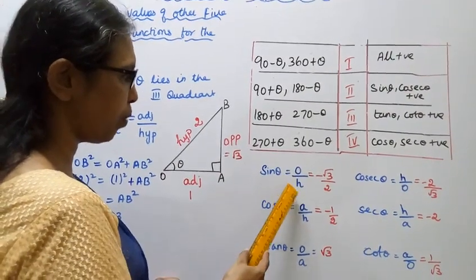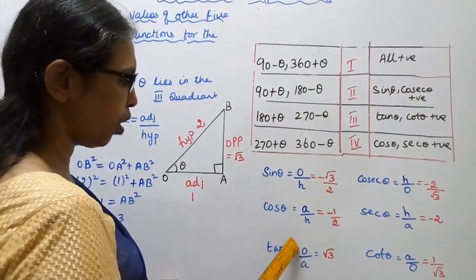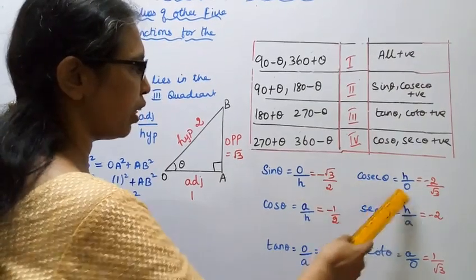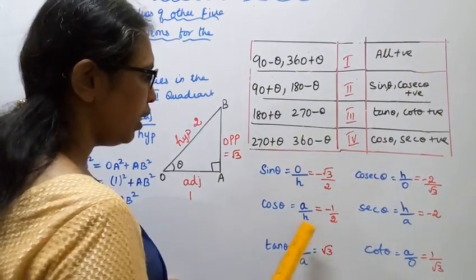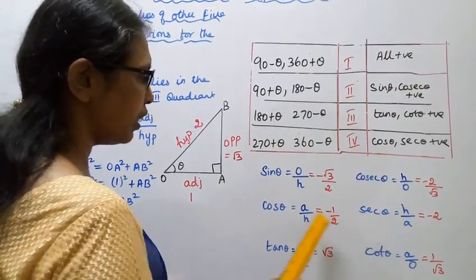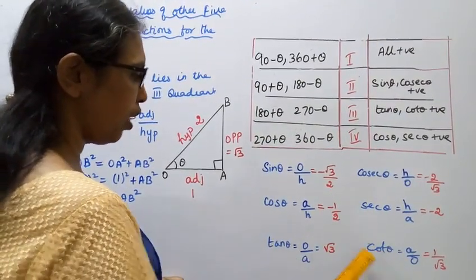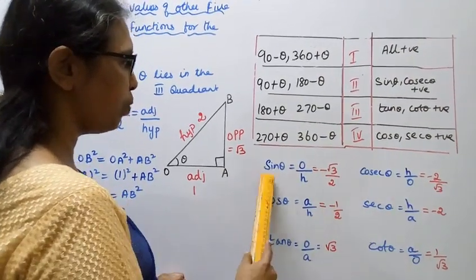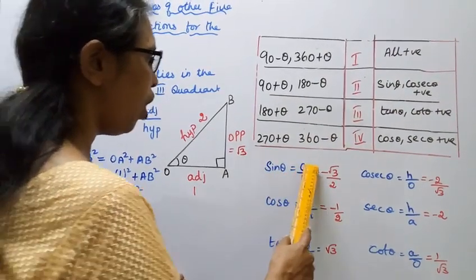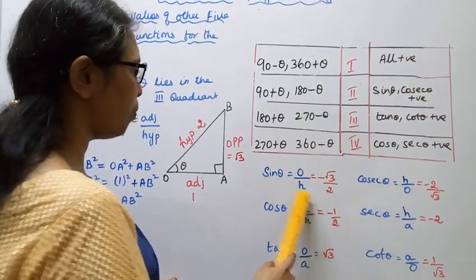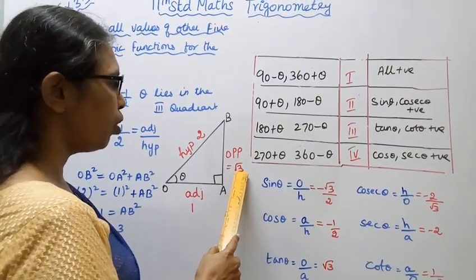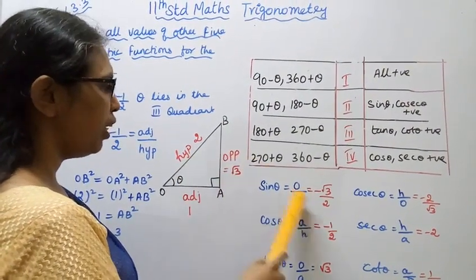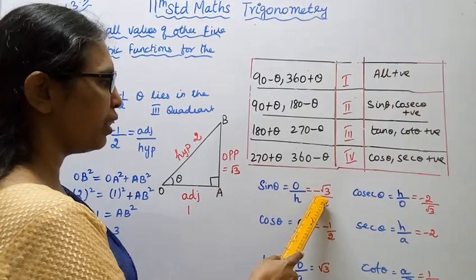Using the mnemonic: sin is opposite by hypotenuse, cos is adjacent by hypotenuse, tan is opposite by adjacent. Cosecant, secant, and cot are their respective reciprocals. Sin theta equals opposite by hypotenuse equals root 3 by 2.